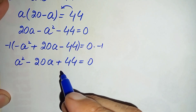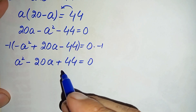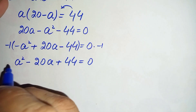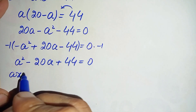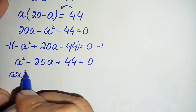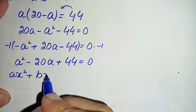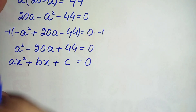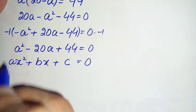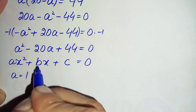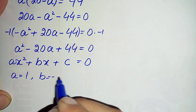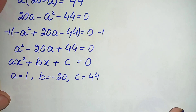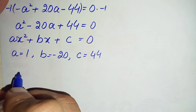We cannot solve this quadratic by factorization, so we will use the quadratic formula. We compare our equation with the general form ax squared plus bx plus c = 0. By comparison, the value of a is 1, the value of b is minus 20, and the value of c is 44.